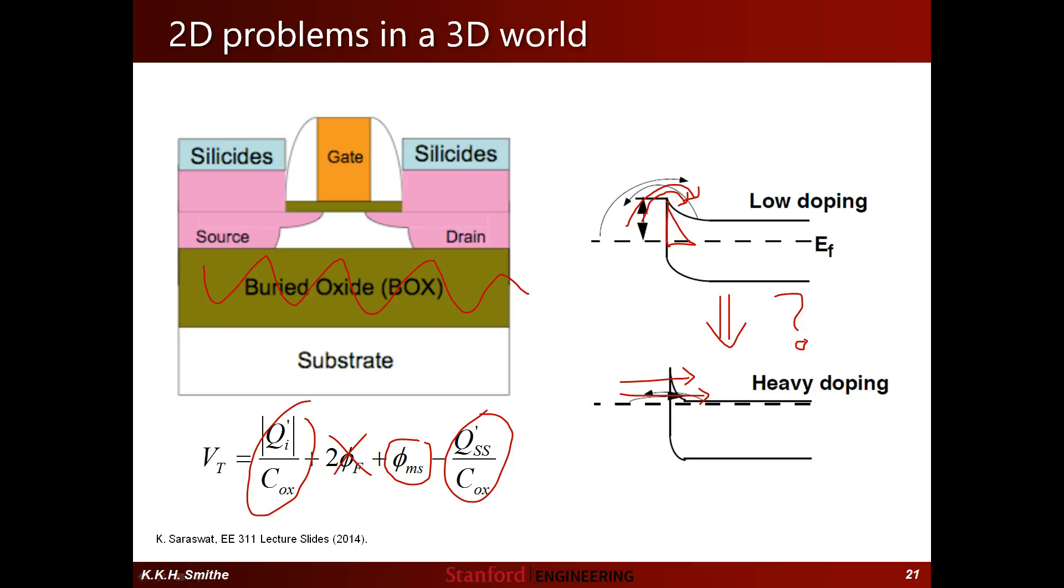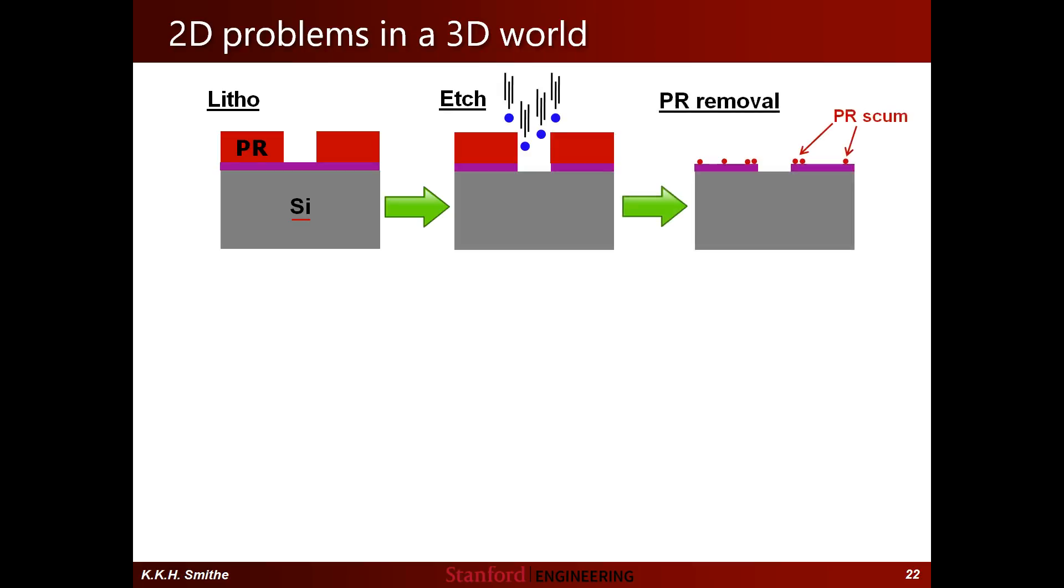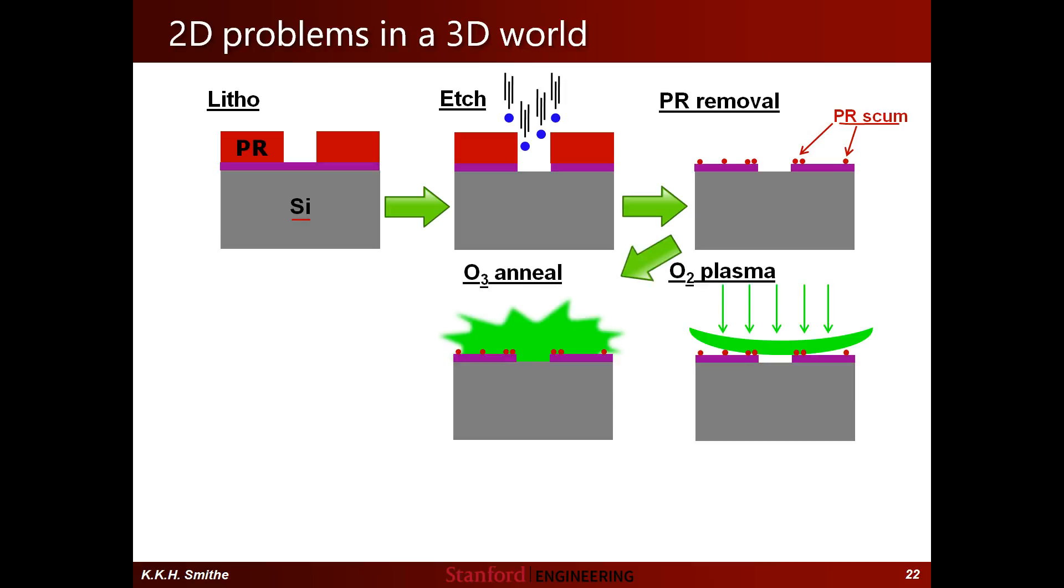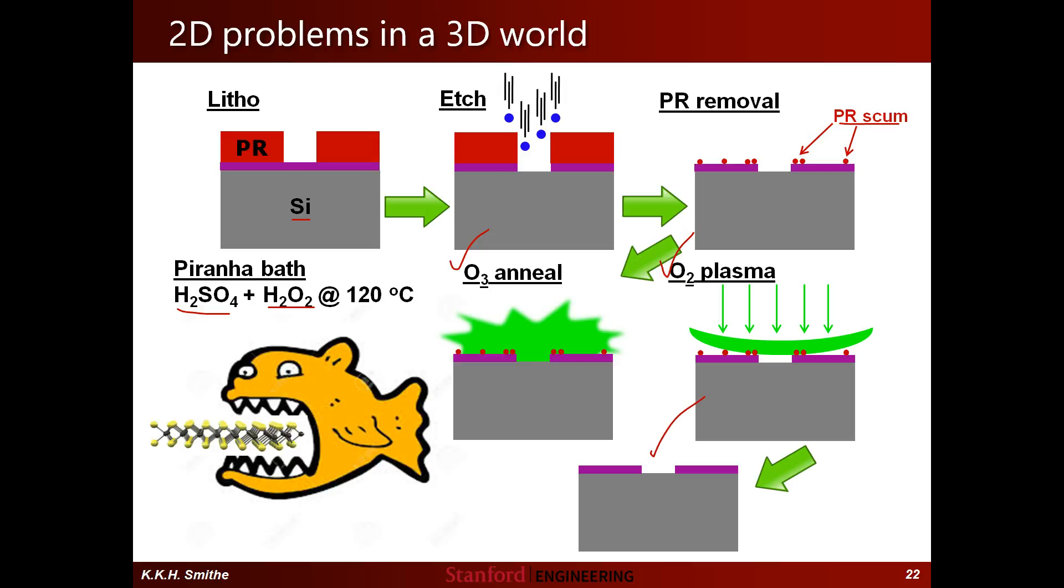The final and arguably biggest issue is integrating these materials with already existing technologies. A lot of the processing tricks that work perfectly well for cleaning and processing three-dimensional materials will totally destroy these two-dimensional materials, oxygen plasma probably being the best example of this. With silicon, after a litho etch step, if you have some photoresist scum left over, you can just zap it with O2 plasma or anneal it in ozone or something to get rid of the organics, or you can run it through what's called a piranha bath, which is sulfuric acid and hydrogen peroxide. But you can't do that with these 2D materials because all of these things will actually eat the MoS2 as well. So there's lots of issues that still need to be hammered out, but this field has only been around for about five years, so there's still plenty of room to grow.